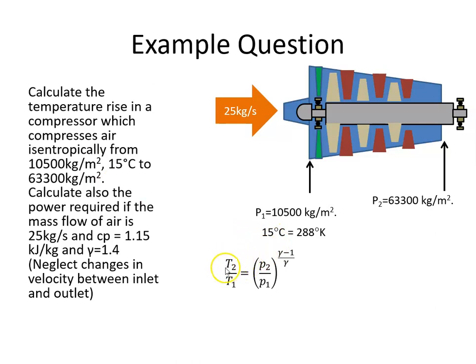The temperature of the outlet divided by the temperature of the inlet is equal to the pressure of the outlet divided by the pressure of the inlet, all to the power of gamma minus 1 over gamma. Let's plug in some values and multiply both sides by 288 to get what T2 is.